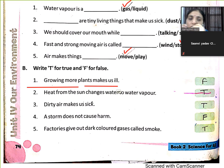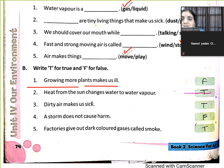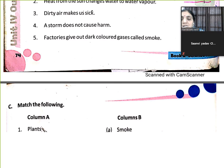Plants jitne zyada honge, utna hum logo ko fresh air milegi. Heat from the sun changes water into water vapour — True. Dirty air makes us sick — True. A storm does not cause harm — False. A storm causes harm — True. Factories give out dark coloured gas called smoke — True.